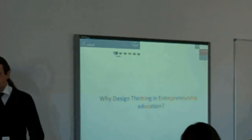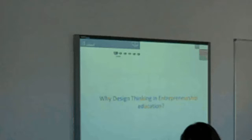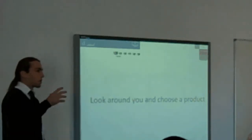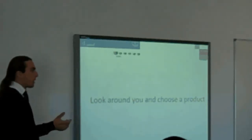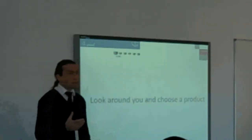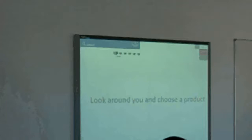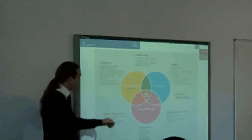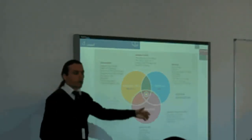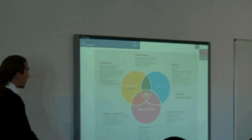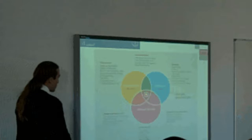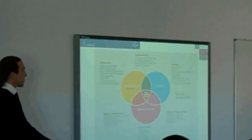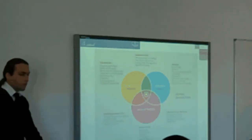Design thinking is in essence a problem-solving methodology that can be used to solve any problem. Every product and every service, every space, every process is designed, and it has to conform to three major goals. The first is that the product or design is technologically feasible — that it can be done. The second is that it is usable and desirable — that people actually need it and want to use it. The third is that the product is viable — that somebody can sell it and make money from it.